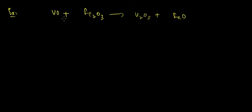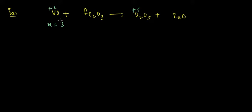If we calculate the oxidation state of V here, in one compound it is plus 2 and in the other it would be plus 5. The number of moles of electron exchange is 3, divided by the coefficient of V which is 3, so n-factor in this case would be 3. For Fe, it is changing from plus 3 to plus 2, so n-factor here would be 2.